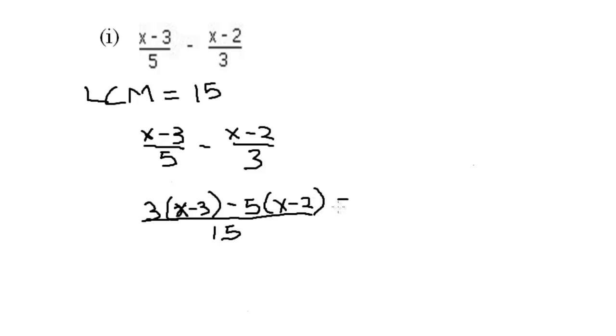Now let's expand these brackets. That gives us 3 times x, that is 3x. 3 times minus 3, that is minus 9. Now minus 5 times x, that is minus 5x. Minus times minus 2, that is a positive 10. And that's all over 15.